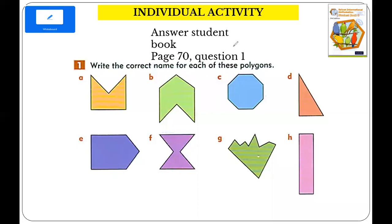Now, in your student book, page 70, question one, I want you to write the correct name of each polygon. You can watch the first part of my video again if you want, and then write the name of each shape. This is the third activity you are going to submit.